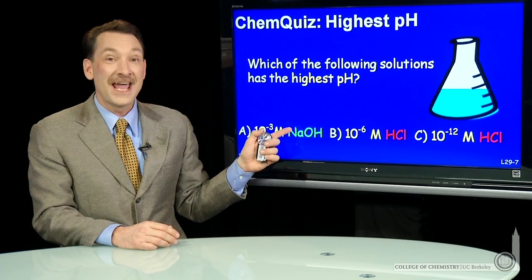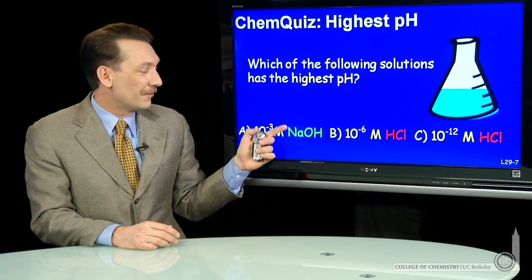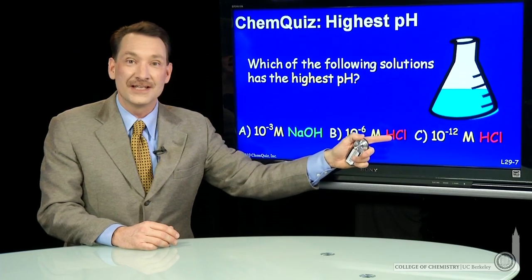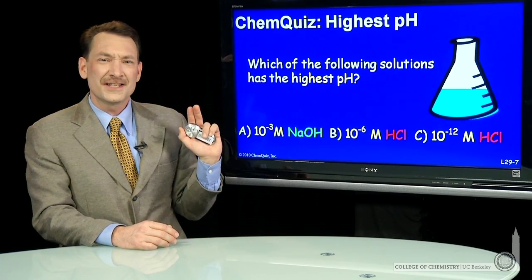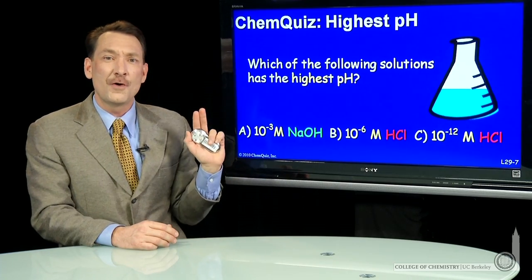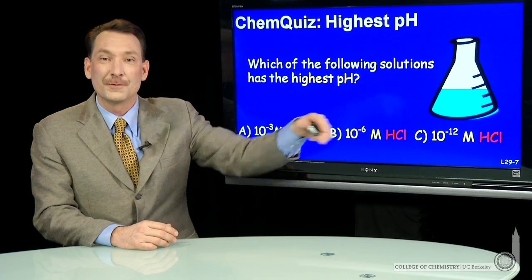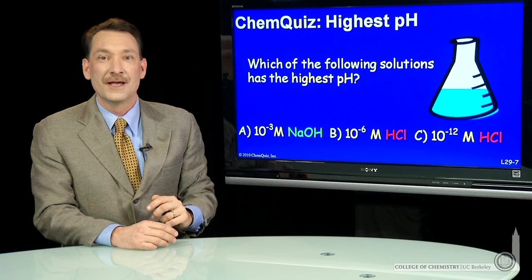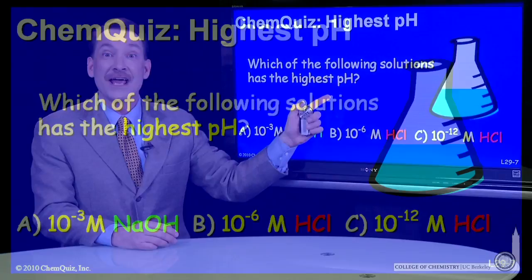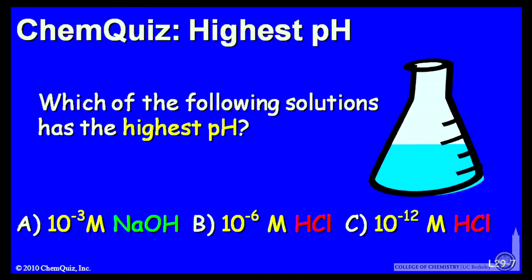So you won't find a Ka or a Kb for sodium hydroxide or HCl because they're essentially infinite. The reactions go very strongly towards complete dissociation. So consider these three solutions and see if you can determine which has the highest pH.